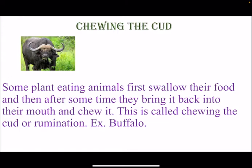Chewing the cud. Some plant-eating animals first swallow their food and then after some time bring it back into their mouth and chew it. This is called chewing the cud or rumination. For example, buffalo. You must have seen buffaloes moving their mouth as if they are eating something, even when you don't see them eating grass. They first swallow their food and then bring it back to chew it.